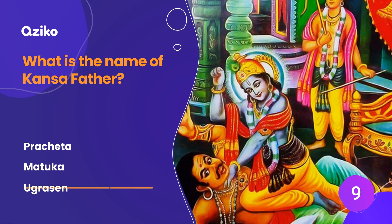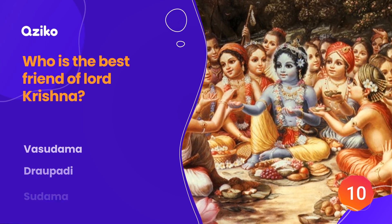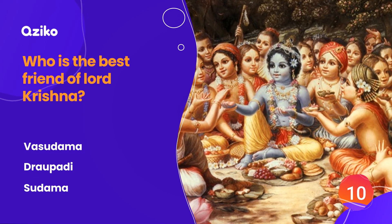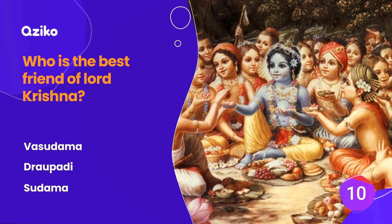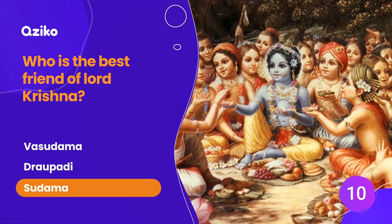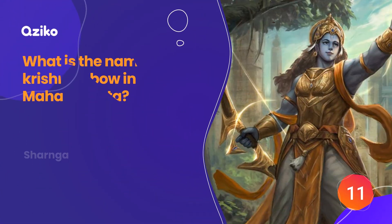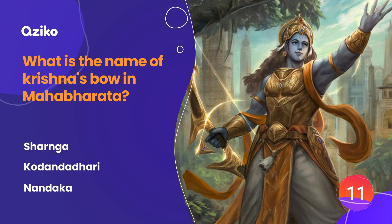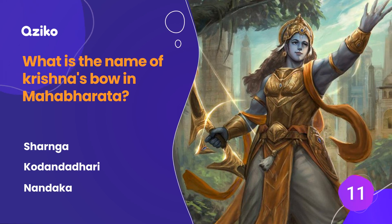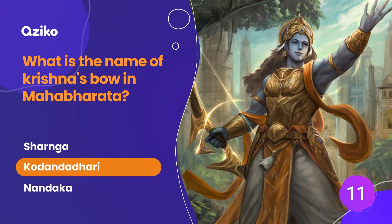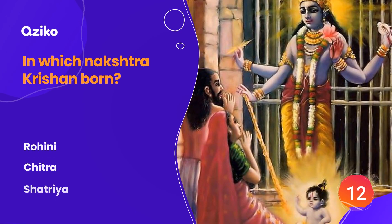What is the name of Kansa's father? The right answer is Agrisen. Who is the best friend of Lord Krishna? The right answer is Sudama. What is the name of Krishna's bow in the Mahabharat? The right answer is Kodandadhari.